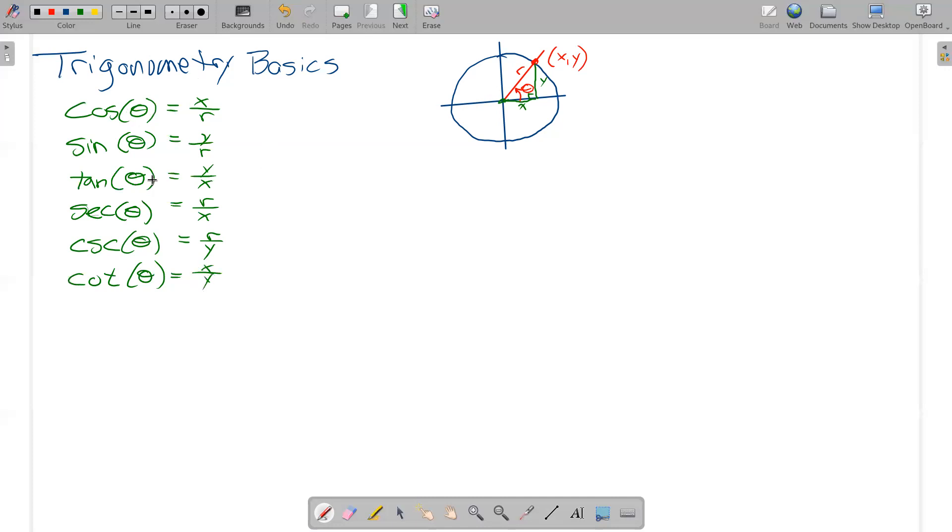And we notice that these have some relationships to each other. They all involve x, y, and r, and so we can kind of play around with them a little bit. The tangent can be viewed as the sine of theta over the cosine of theta. The secant of theta we can see here is the reciprocal of the cosine, so one over cosine of theta.